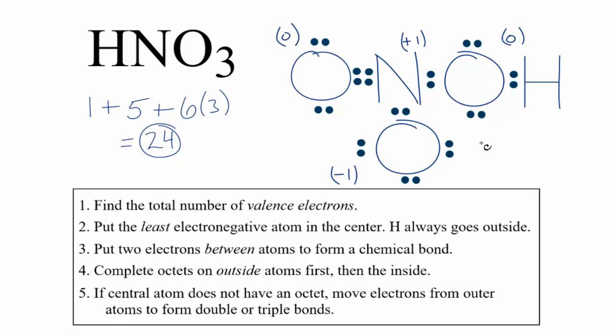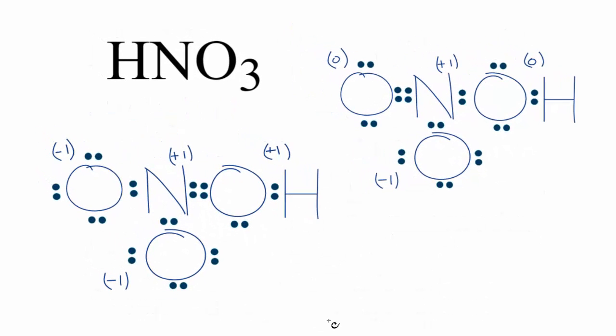There is one more way we could draw it, though. If we put the double bond here between the nitrogen with the OH group, we'd end up with formal charges that look like this: plus one on this oxygen, plus one on the nitrogen, and then negative one, negative one. It all adds up to zero.